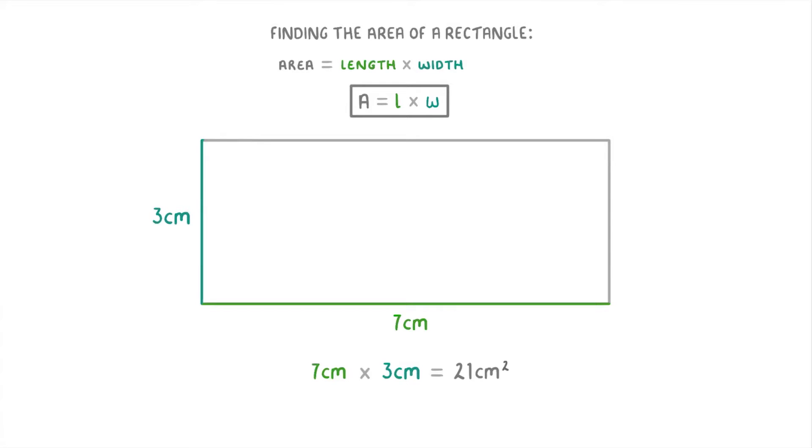Before we move on I just want to point out that you can also think of the equation as area equals base times height where the base would be the seven centimeter side and the height would be the three centimeter side. But it works in exactly the same way so the area would be the base of seven times the height of three to get the area of 21 square centimeters.